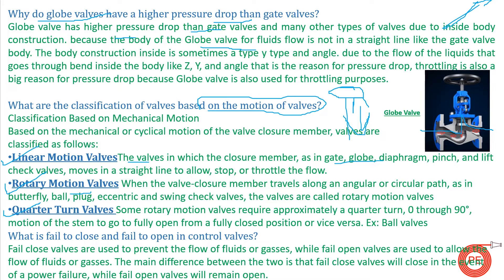For rotary motion, when the spindle is rotated with a handle, there is a rotary movement or 360-degree movement. For example, butterfly valves have a disc inside — when the spindle is rotated, there is a rotary movement of the disc. Other examples of rotary motion valves are ball valves, plug valves, eccentric valves, and swing check valves.